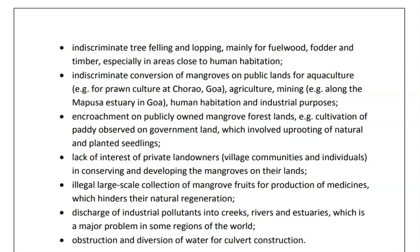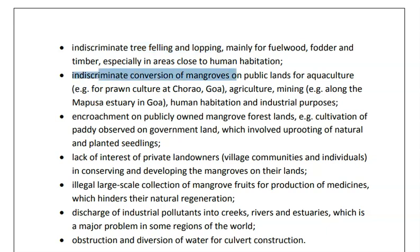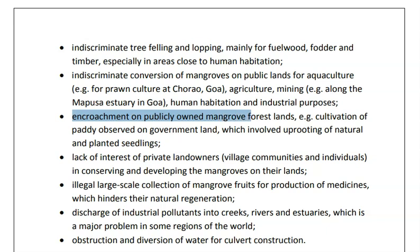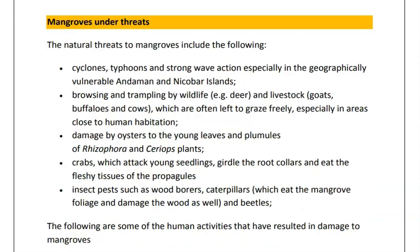Threats due to human activities are decreasing mangroves at high speed. These include deforestation, indiscriminate tree felling and lopping, indiscriminate conversion of mangroves for aquaculture and agriculture, encroachment due to tourism, lack of interest of private landowners, illegal large-scale collection of mangrove forest for medicines which hinders natural regeneration, and pollution from industries and sewage waste obstructing the flow of water. When reading about threats to mangroves, coral reefs or wetlands, always divide them between natural threats and threats due to human activities.